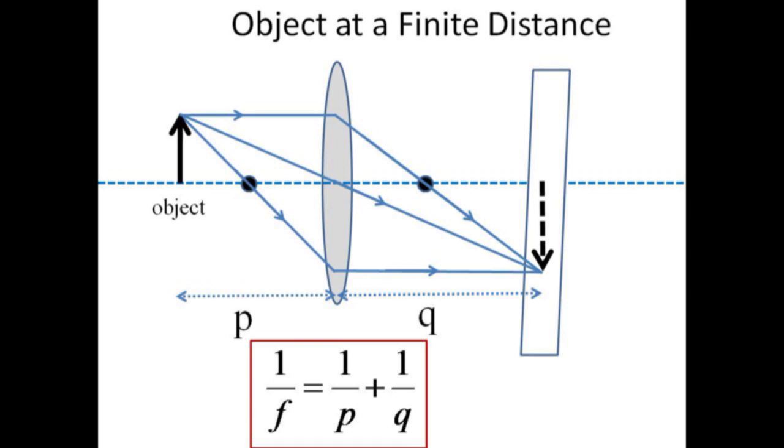Generally, this inverse relationship implies that for objects beyond the near focal point, the smaller p becomes, the larger q becomes.